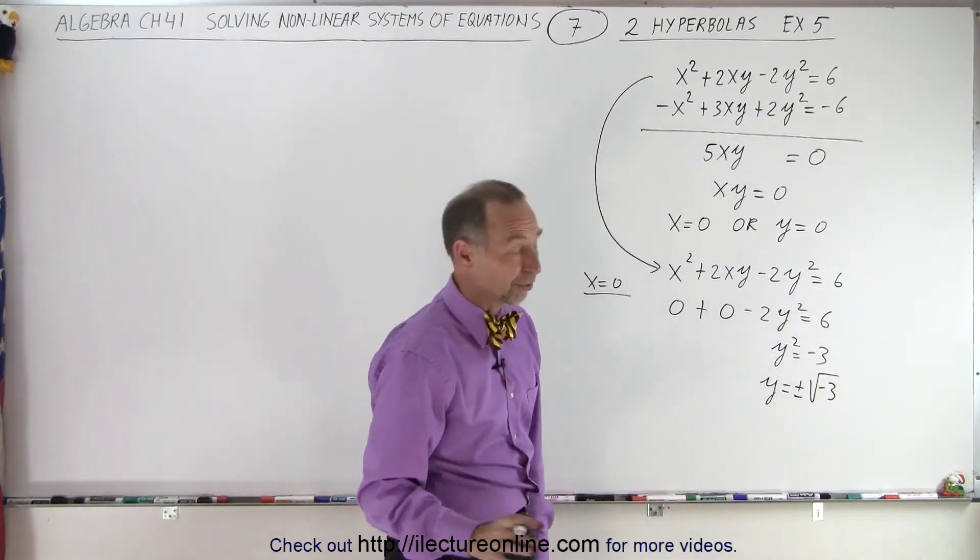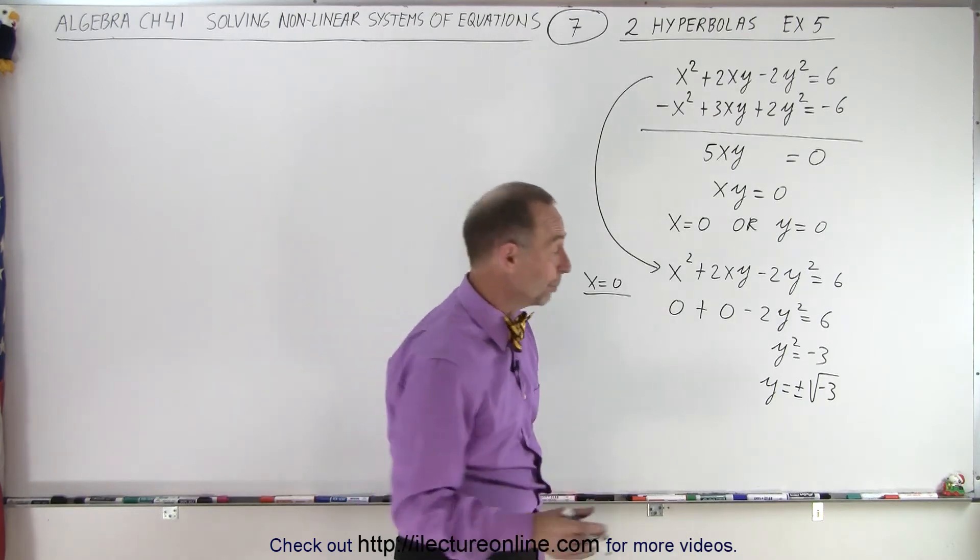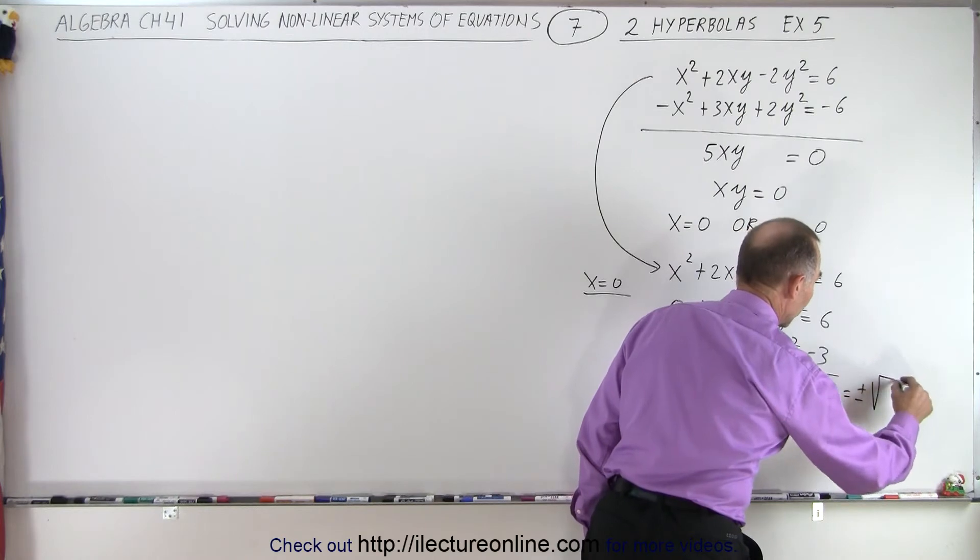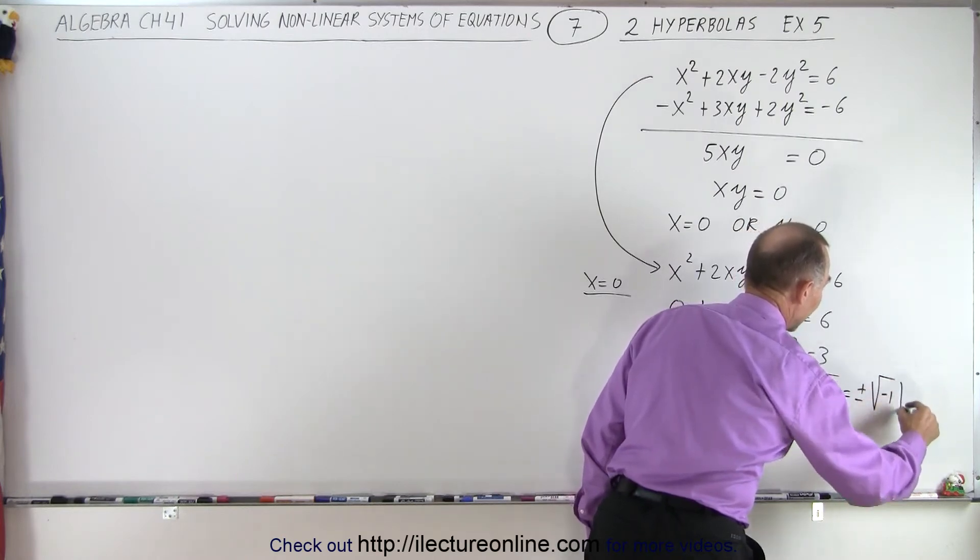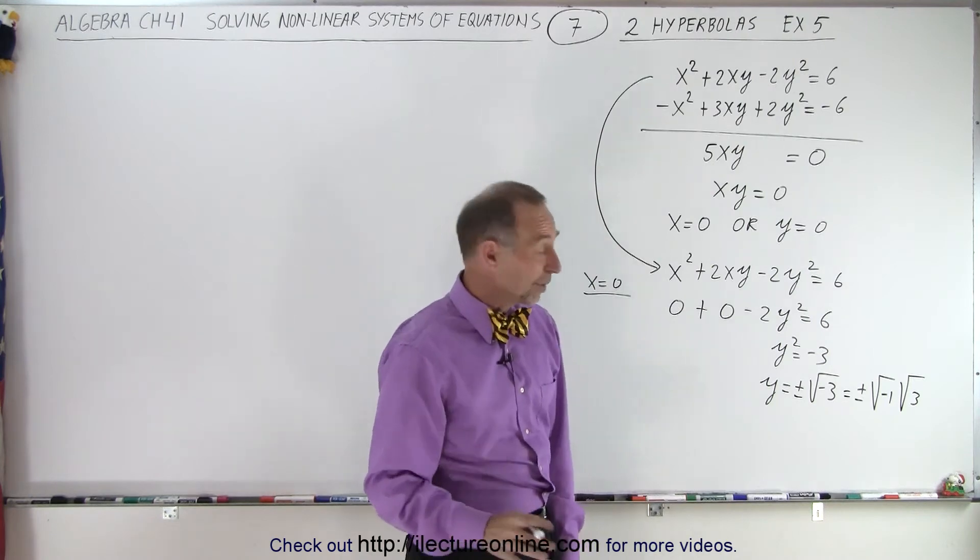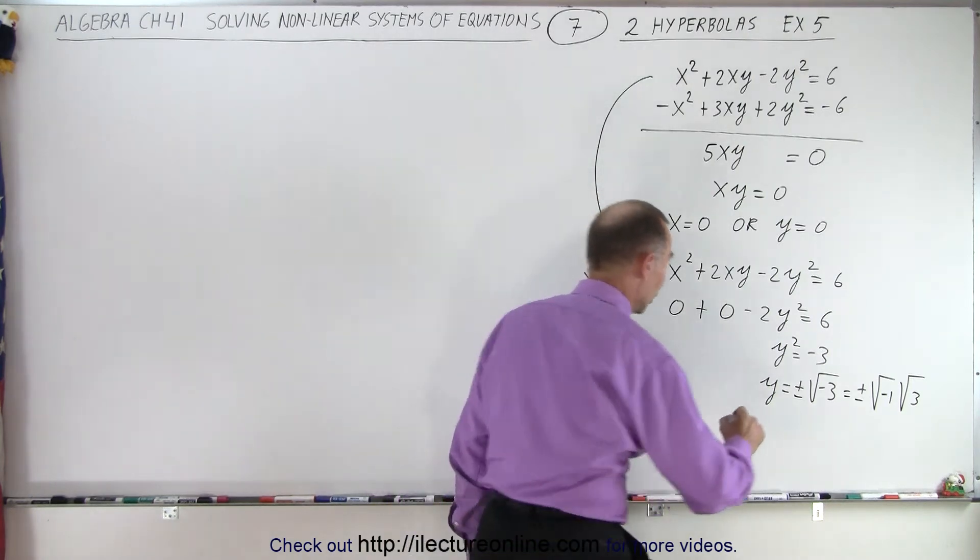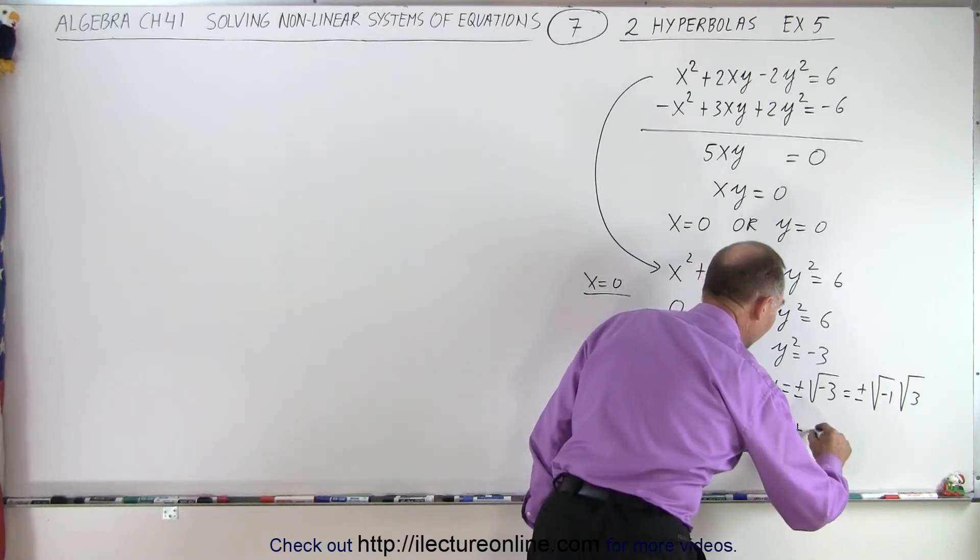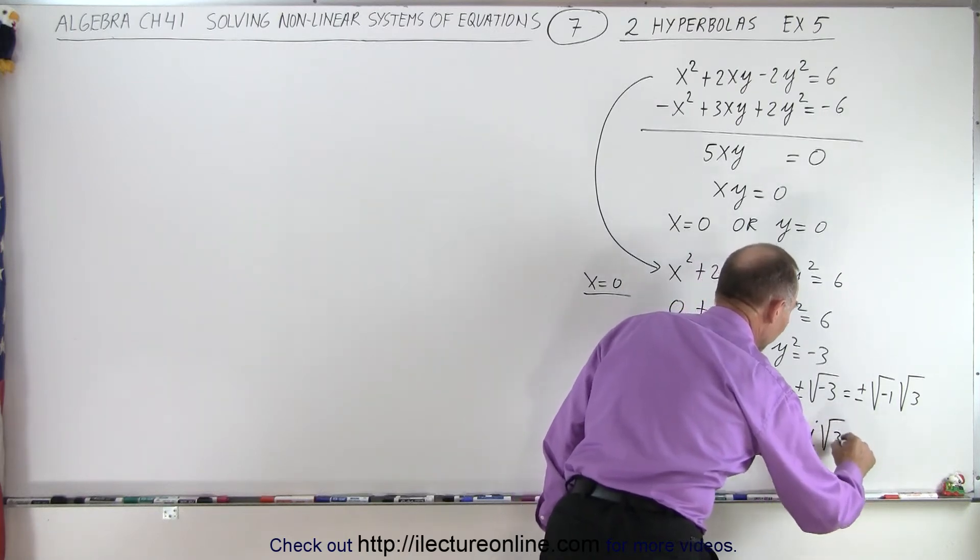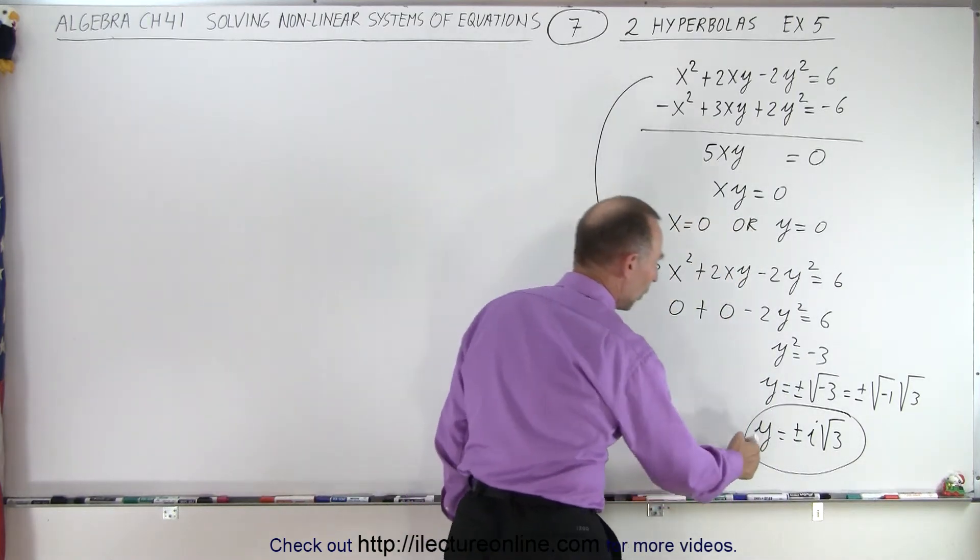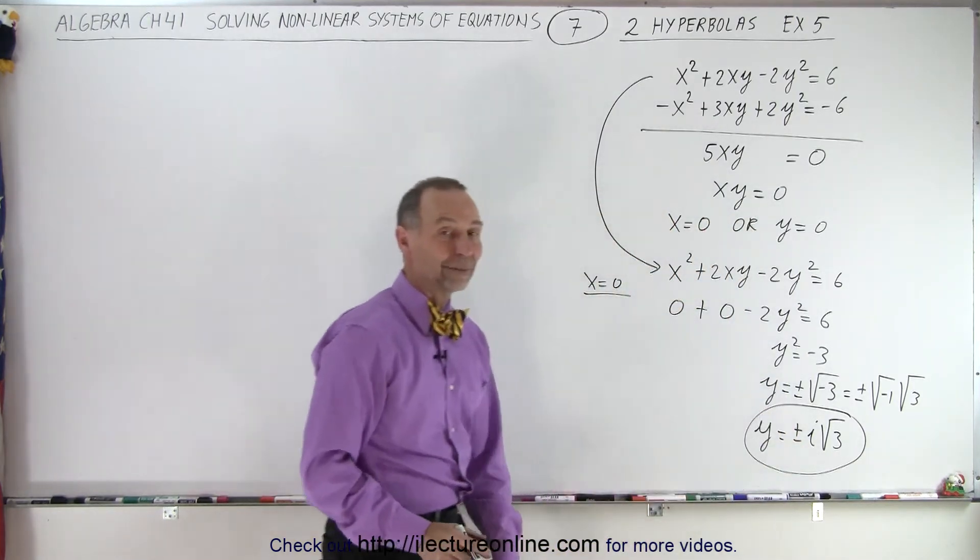Now, of course, the square root of negative 3 is an imaginary number. This can be written as plus or minus the square root of negative 1 times the square root of 3. And the square root of negative 1 is equal to i, the imaginary number. So that means that y is equal to plus or minus i times the square root of 3. So that's the case when x is 0, y is plus or minus i times the square root of 3.